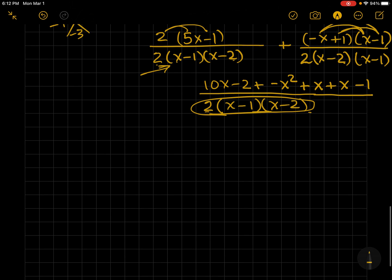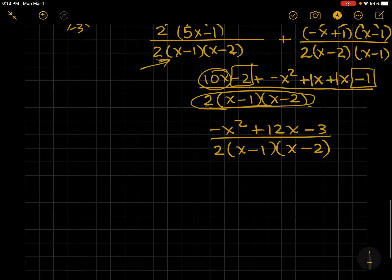So, now I do need to combine. And I see I have a negative x squared. Let's see, that's 10, 11, 12 x's. And let's see, that's a negative 2 and a negative 1 looks like negative 3. And write my common denominator. As long as you're good at factoring, you'll be in pretty good shape for this.